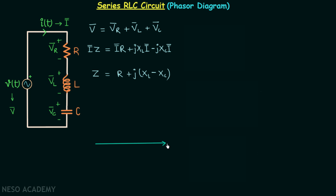This reference phasor is our current phasor. VR phasor is the voltage across the resistor and equals I phasor multiplied by R. This means it will have a magnitude proportional to I phasor and will be in the same phase as I phasor, because it is the voltage across the resistor.